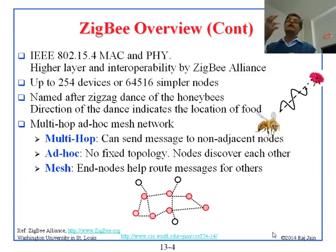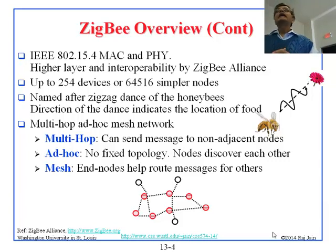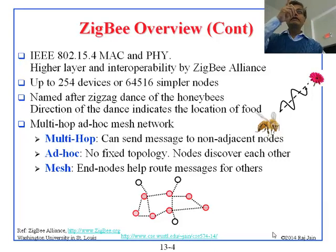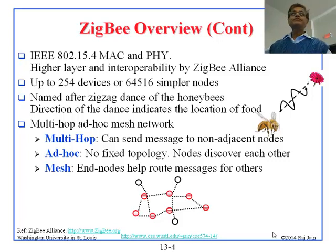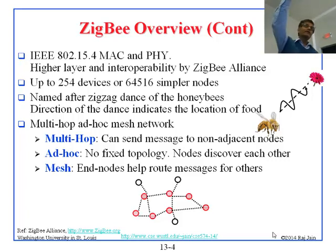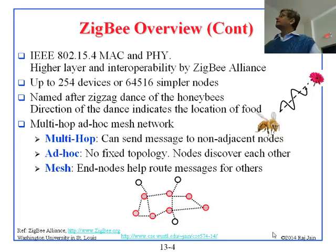When a bee goes out and finds nectar at a flower, it comes back to the hive and tells everybody to go in that direction — there is food there. The way it communicates is by moving around in a pattern. The frequency of movement tells how far away the food is, and the direction tells which direction it is. So you know that one mile from here, in the north direction, there is food. That is the Zigbee dance.